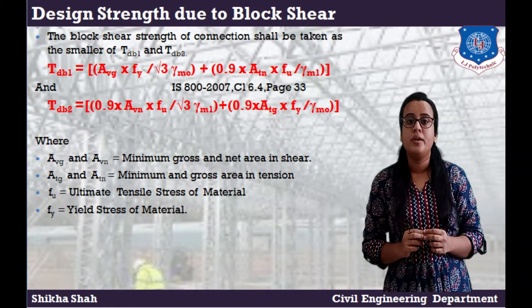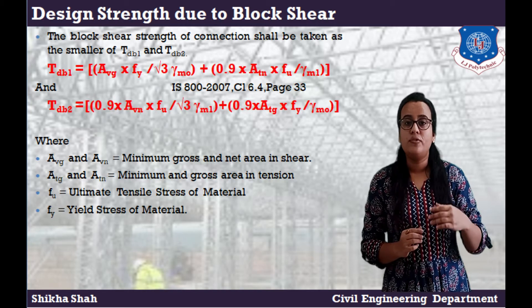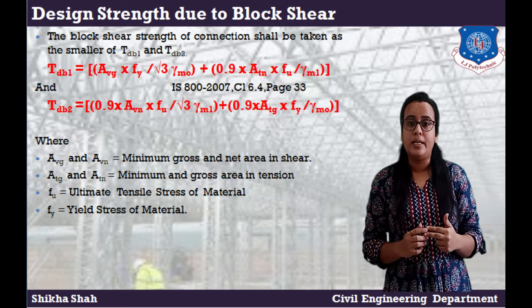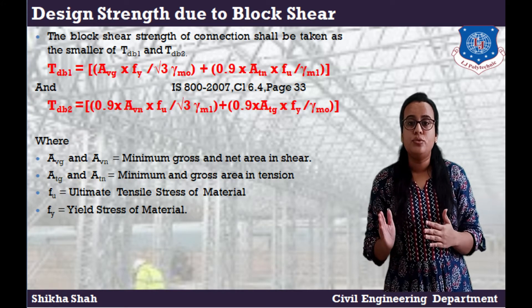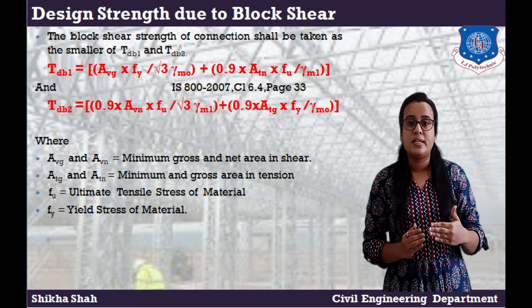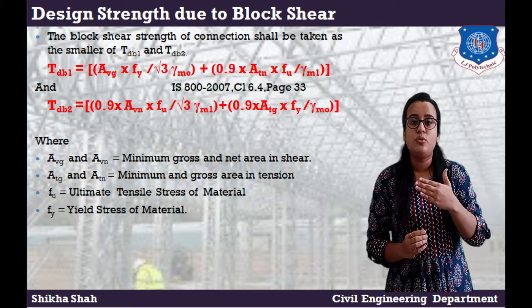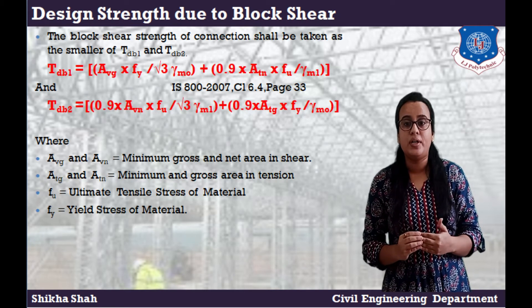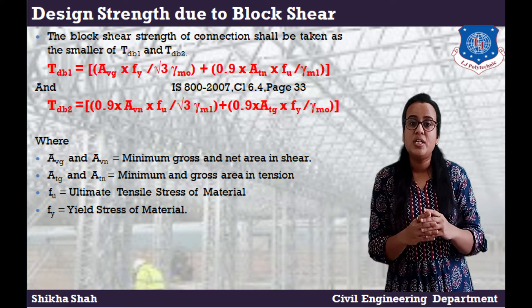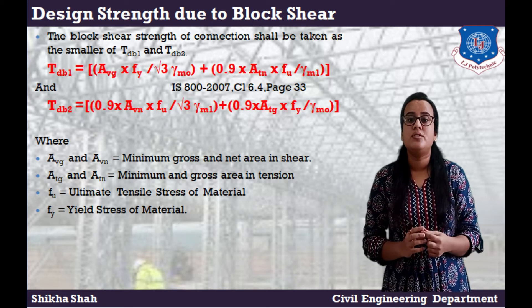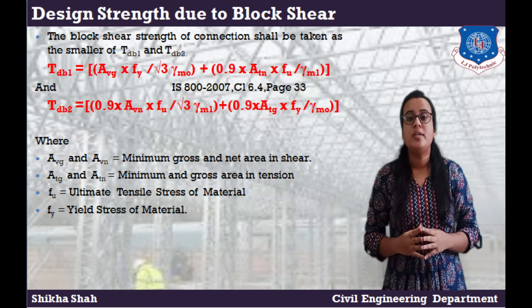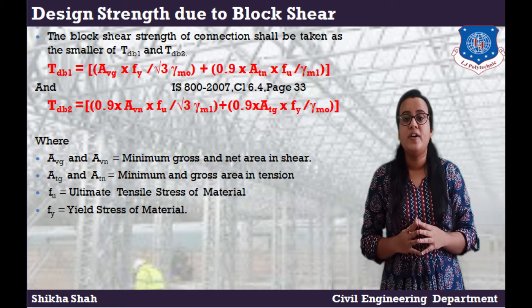Design strength due to block shear: the block shear strength of the connection shall be taken as the smaller of two values, Tdb1 and Tdb2. Tdb1 = Avg × Fy / (√3 × γm0) + 0.9 × Atn × Fu / γm1. Tdb2 = 0.9 × Avn × Fu / (√3 × γm1) + Atg × Fy / γm0. Where Avg and Avn are the gross and net area in shear, Atg and Atn are the gross and net area in tension, Fu is the ultimate tensile stress, and Fy is the yield stress of the material.